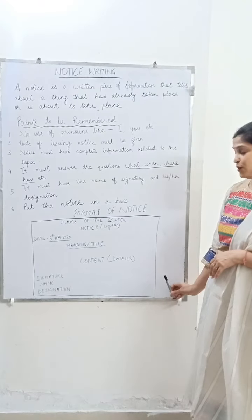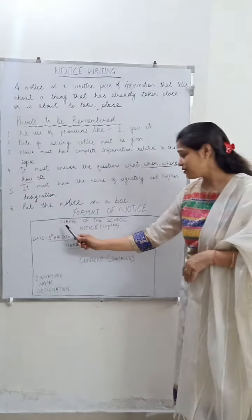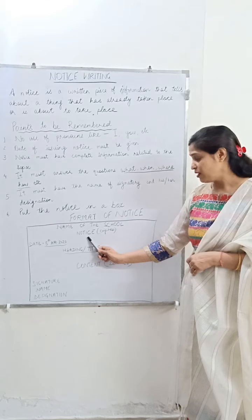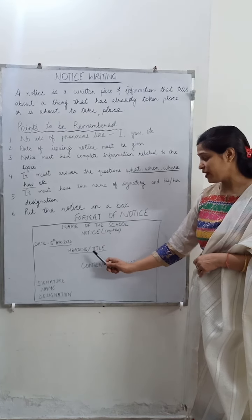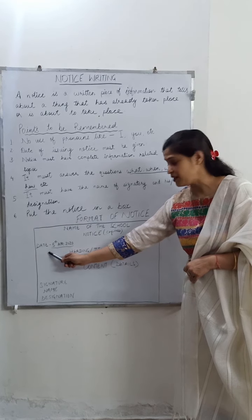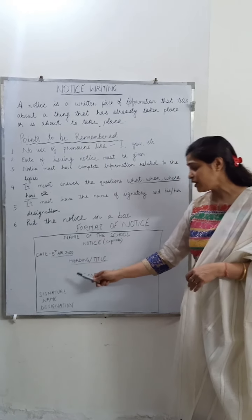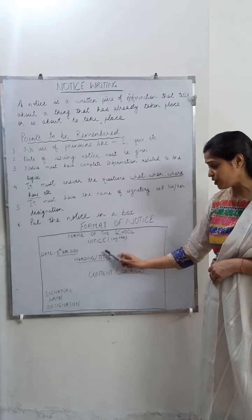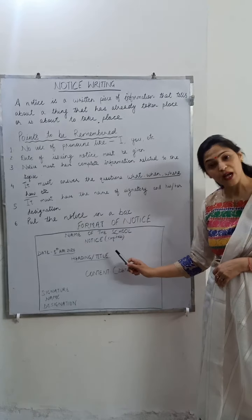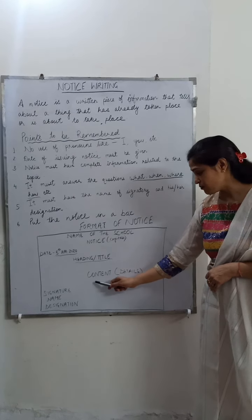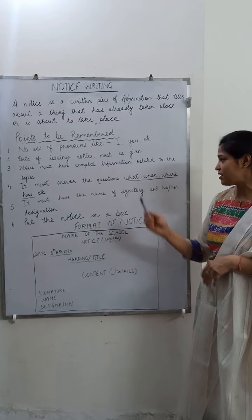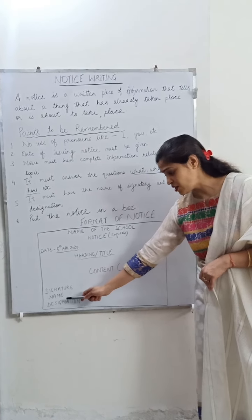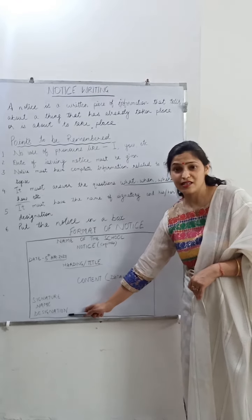So this is the format of a notice. Remember: on the top, write the name of the school; below that, write the word NOTICE; then at the very left corner, write the date in the proper format. Then the heading or title, and all three headings should be in capital letters only. Below this comes the content covering all necessary details of what, when, where, and how. At the end, write your signature, your full name, and your designation.